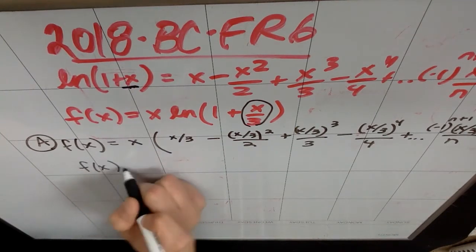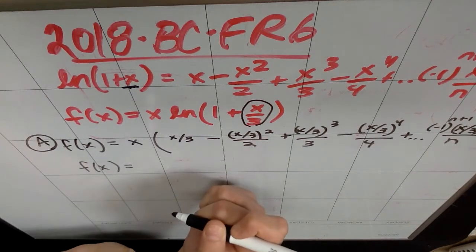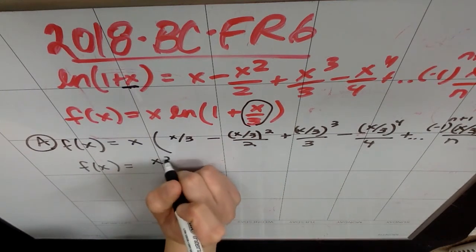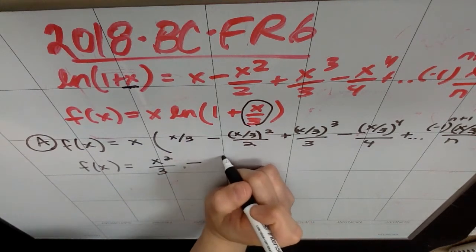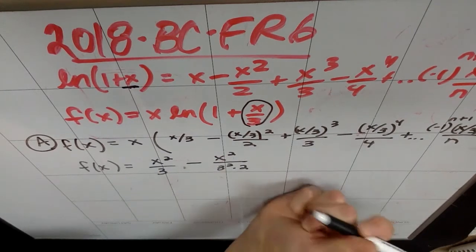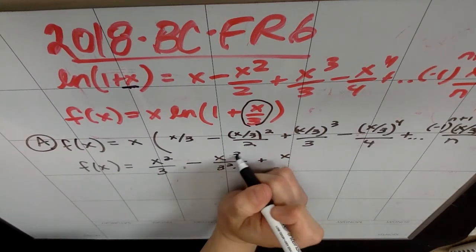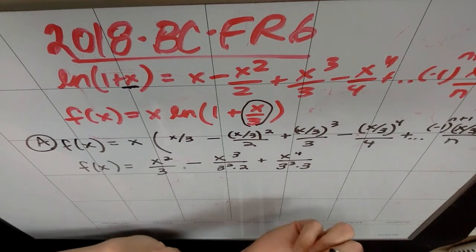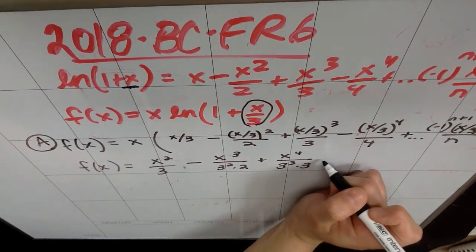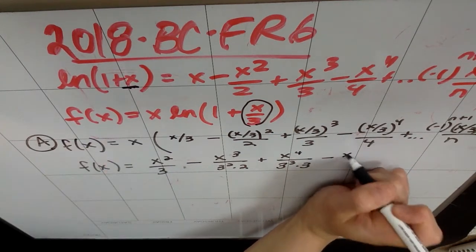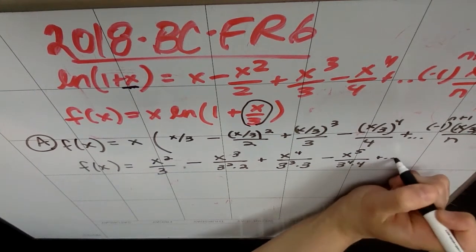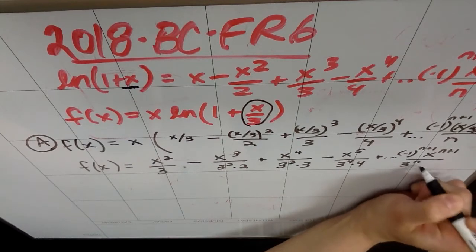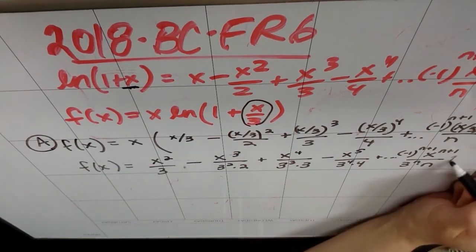Then I distribute the x. What you'll notice is that the three is actually going to be to the nth power. So I end up with x² over 3, minus x³ over (3² · 2), plus x⁴ over (3³ · 3), minus x⁵ over (3⁴ · 4), plus dot dot dot. The general term is negative one to the n+1 times x to the n+1 over (3ⁿ · n). That's my series.